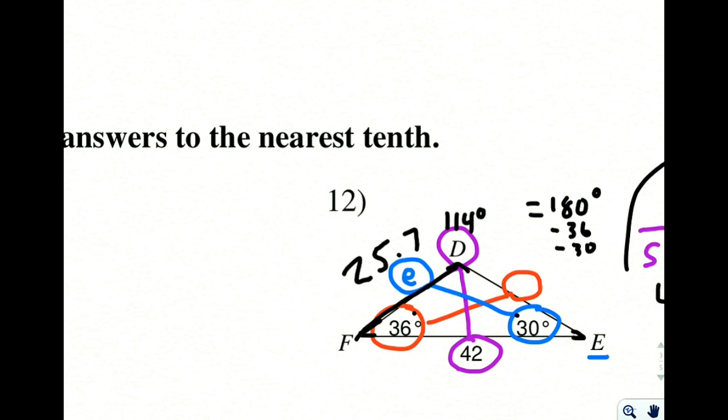When we calculate these, it's always good to make sure that these sides seem reasonable. We have a side length of 42 across from an angle of 114. So the biggest angle has the biggest side across from it.